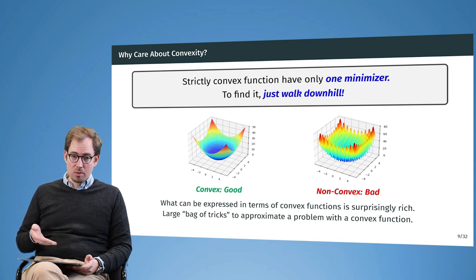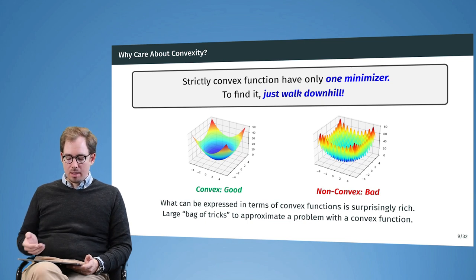We care about convexity because it has only one minimizer and because when we want to find this minimizer, we can just, quote unquote, walk downhill.